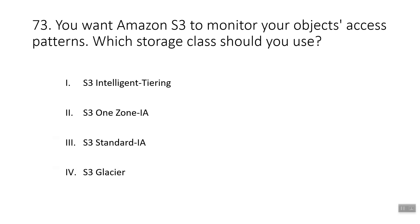Question seventy-three: you want Amazon S3 to monitor your objects' access patterns. Which storage class should you use? The matching answer is S3 Intelligent-Tiering, which monitors objects' access patterns. S3 One Zone-IA is ideal for infrequently accessed data that does not require high availability. S3 Standard-IA is for infrequently accessed data that requires high availability. S3 Glacier is a low-cost class ideal for data archiving.